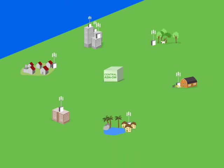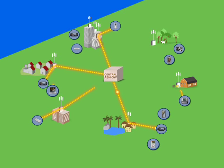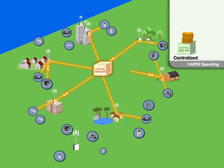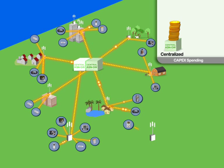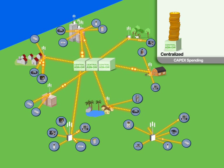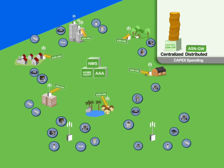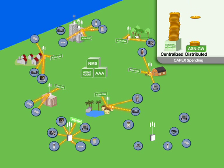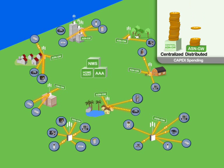In a centralized architecture, once the central ASN gateway has reached full capacity, the operator is required to purchase an additional costly ASN gateway. Alvarian's architecture provides operators with a scalable solution, from small-scale deployments to mass networks. This approach is based on a pay-as-you-grow policy, designed to create the most efficient CAPEX spending for operators.